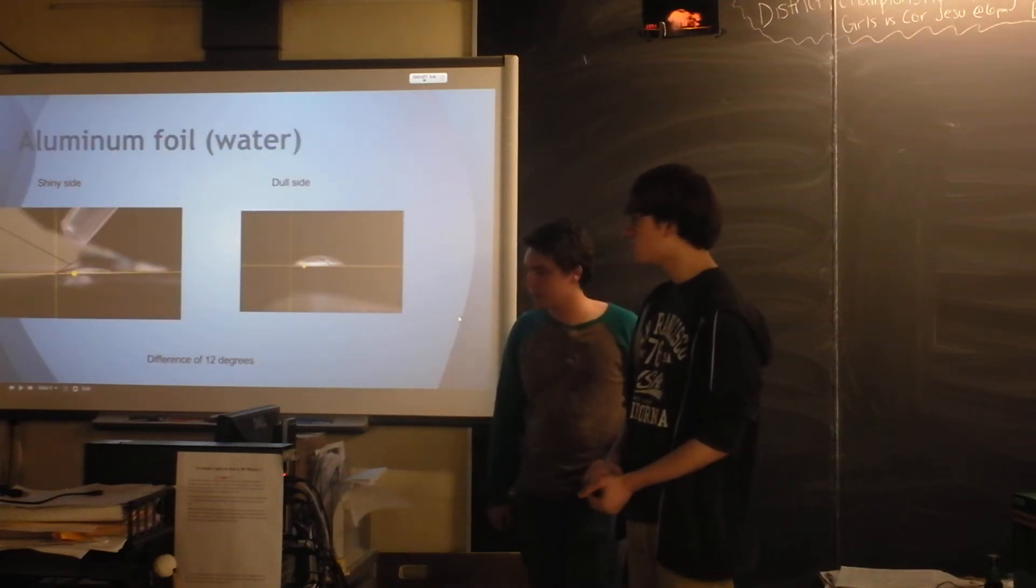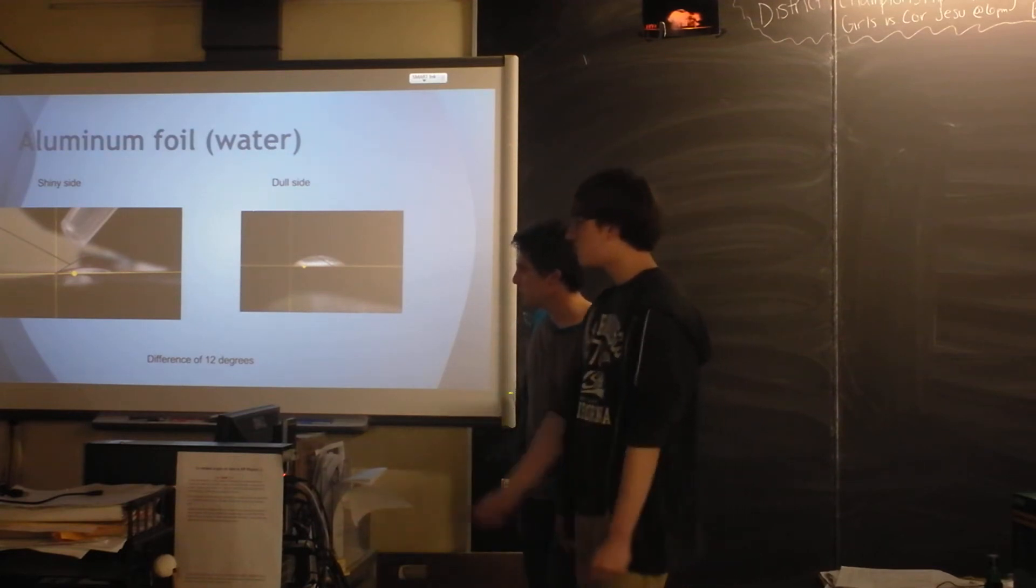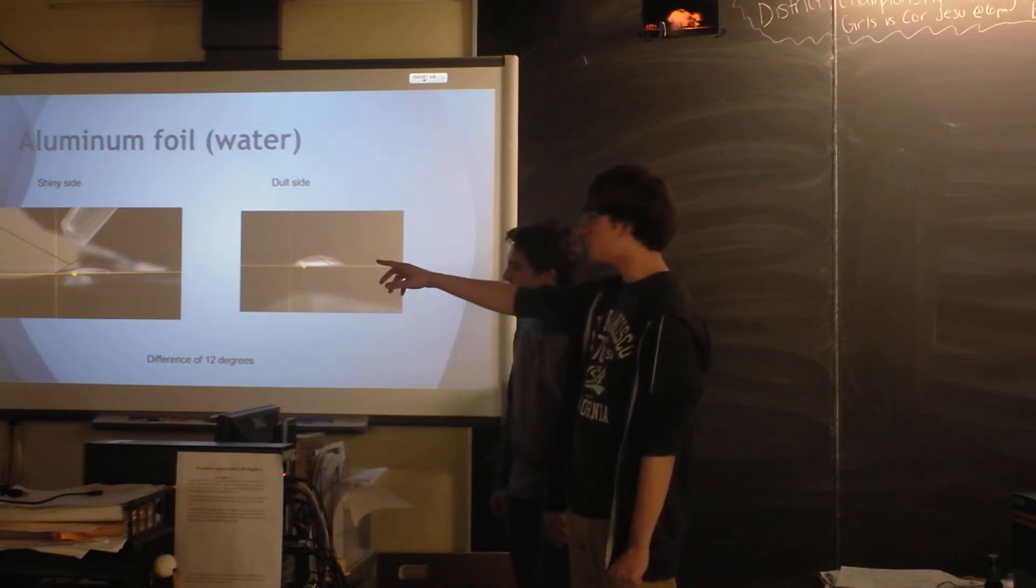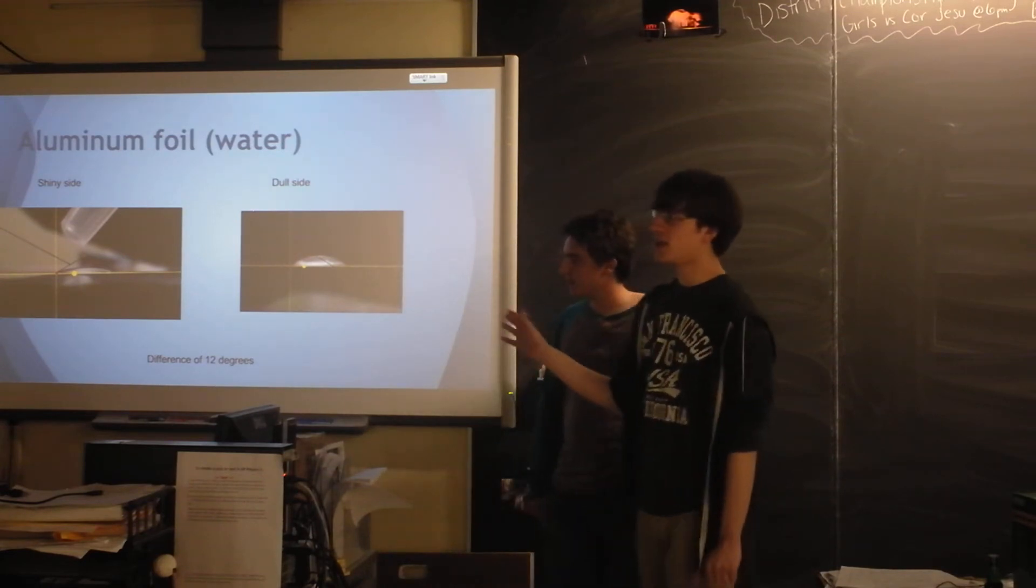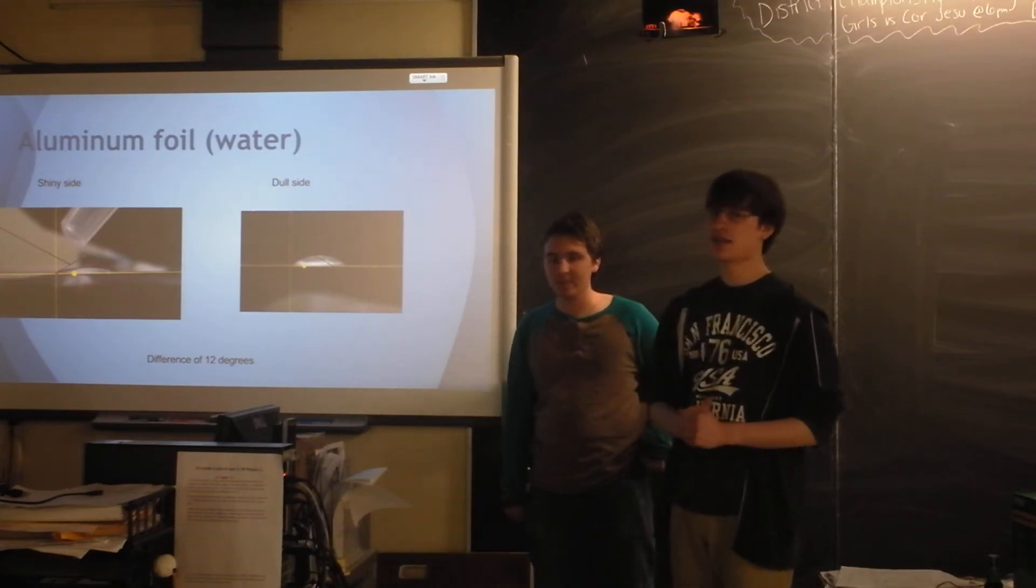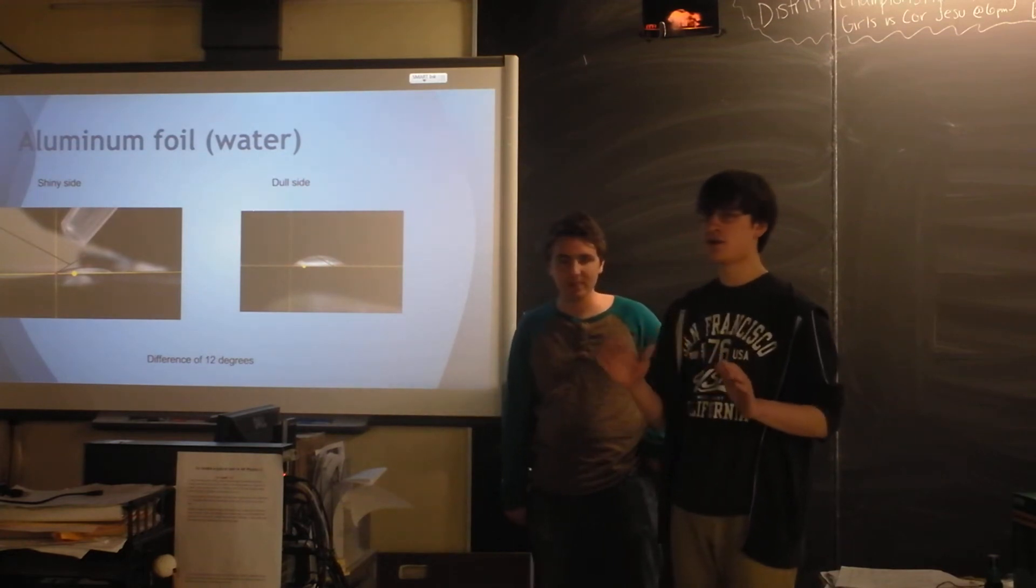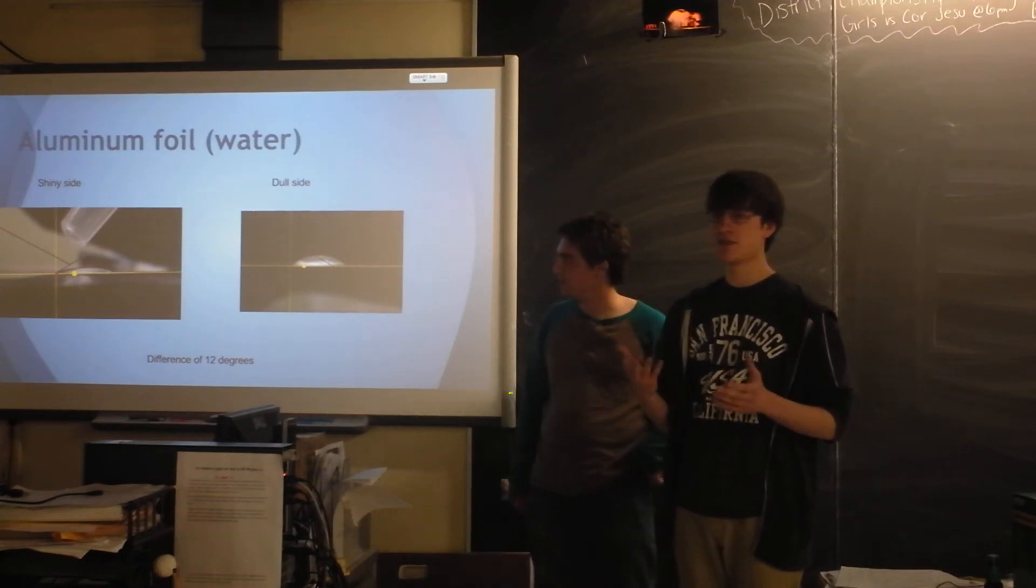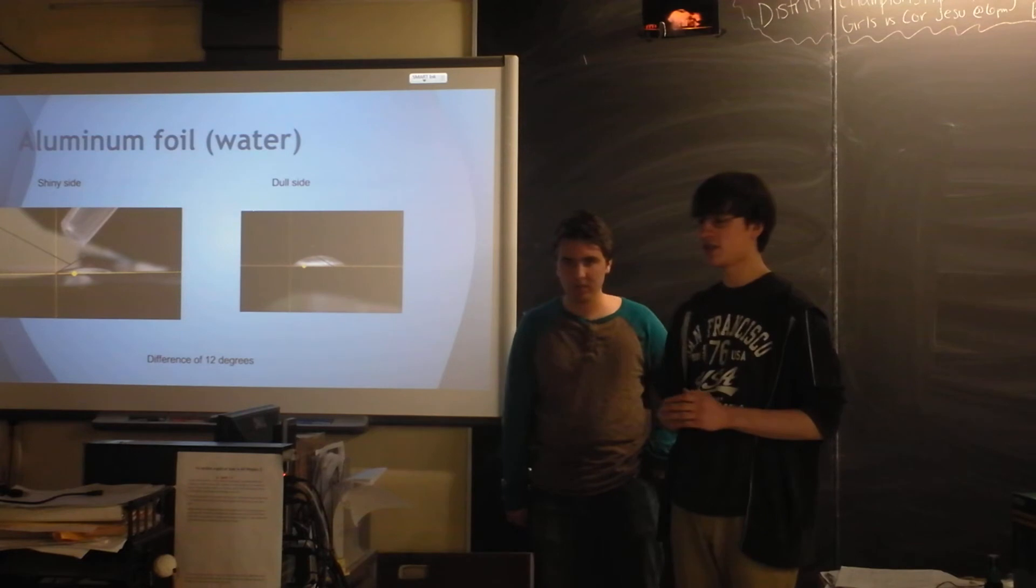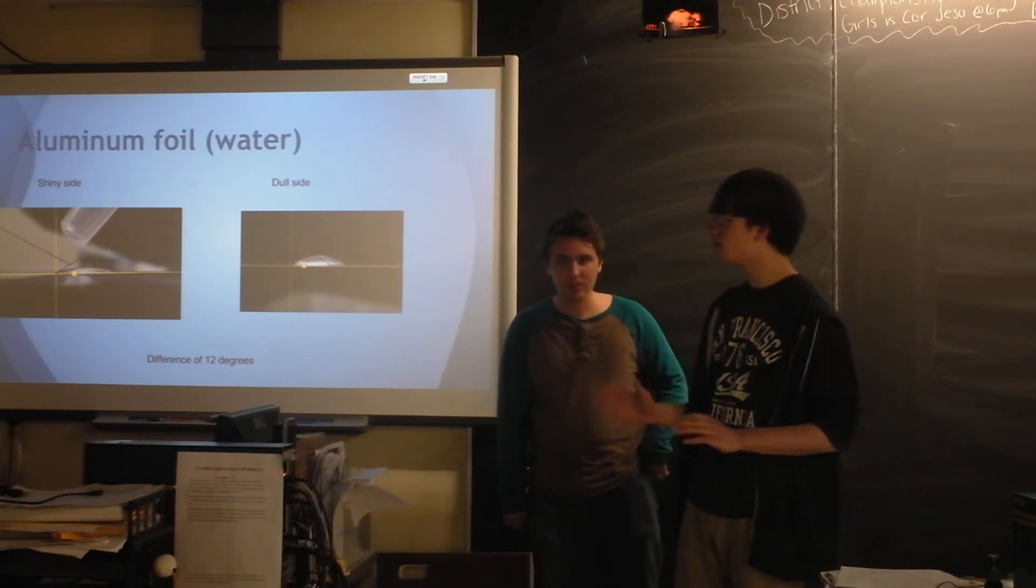And here's some cool data that we got. Notice that the shiny side of aluminum has a much smaller contact angle than the dull side, and I think that the explanation for that is that the shiny side of aluminum, a lot more of the, on a microscopic scale, a lot more of the aluminum is in contact with the fluid because there's less small crevices and things where the surface tension would prevent it from entering them.